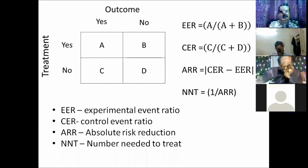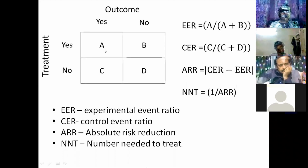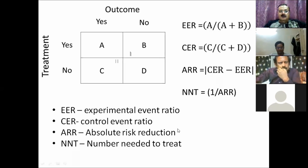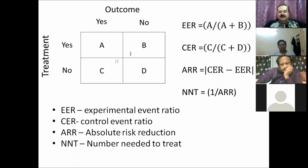The NNT calculation uses a 2×2 table: treatment given with outcome present is A, treatment given with outcome absent is B, no treatment with outcome present is C, and no treatment with outcome absent is D. From this we derive the experimental event rate, the control event rate, the absolute risk reduction (control rate minus experimental rate), and NNT = 1 / absolute risk reduction. Most clinical trials report both absolute risk reduction and NNT.